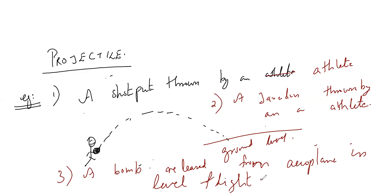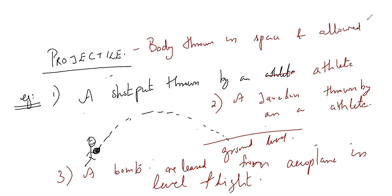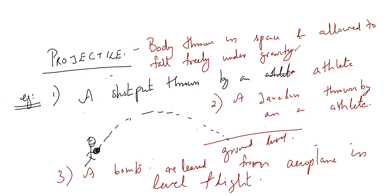So what is a projectile? A projectile is a body thrown in space and allowed to fall freely under gravity. Projectile motion is the motion in which the body is thrown into space and allowed to free-fall under gravity.